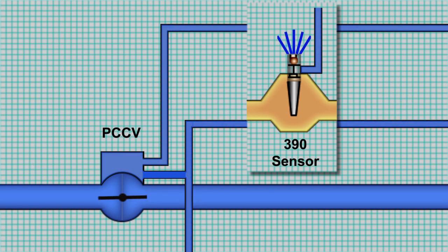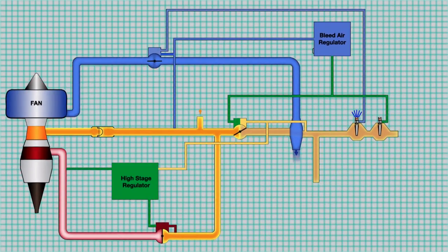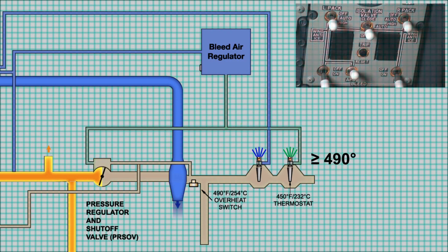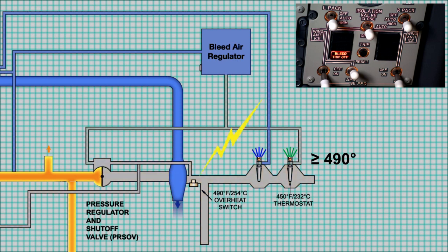If the PCCV cannot provide enough cooling air, the system can also use the PRSOV to control temperature. If system temperature reaches 450 degrees Fahrenheit, the 450 sensor will open, reducing control air to the PRSOV and causing it to move toward the closed position. This reduces the amount of bleed air flowing through the pre-cooler, allowing the pre-cooler to reduce temperature more effectively. If temperatures continue to rise, the 450 sensor will open fully, reducing pressure further and protecting the air conditioning packs and wing leading edge from extremely high temperatures. If the temperature reaches 490 degrees Fahrenheit, the 490 over-temperature switch will close the PRSOV and the bleed trip light will come on.